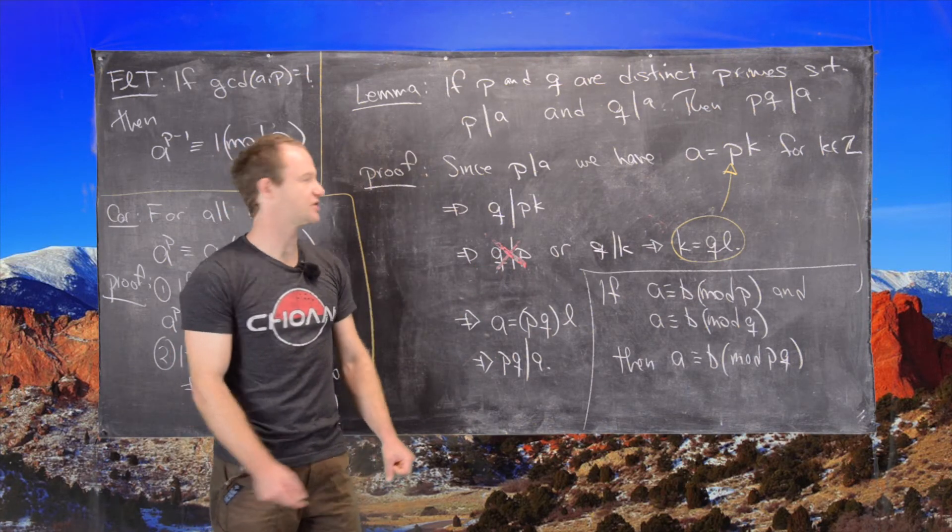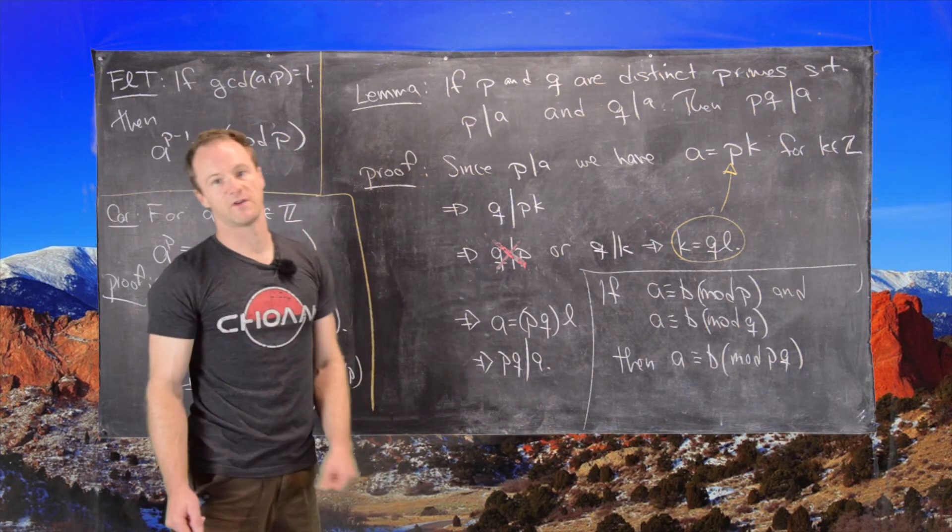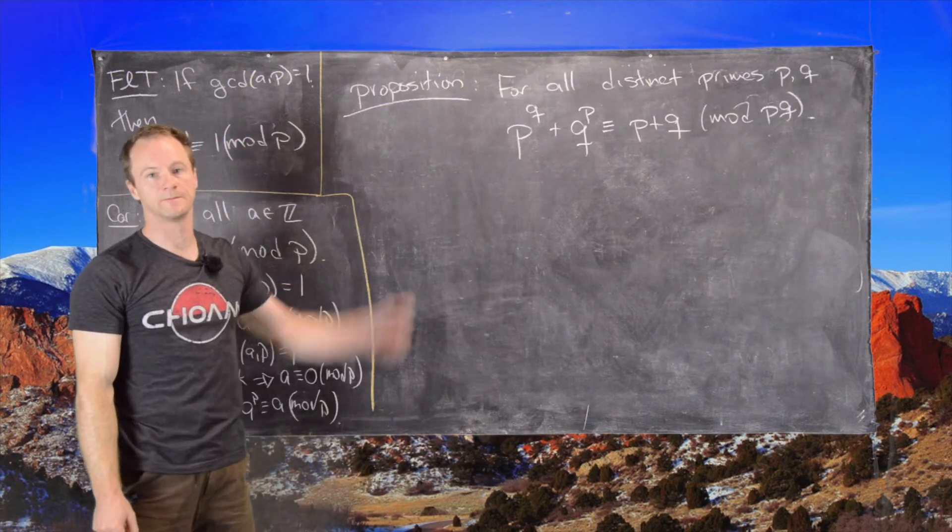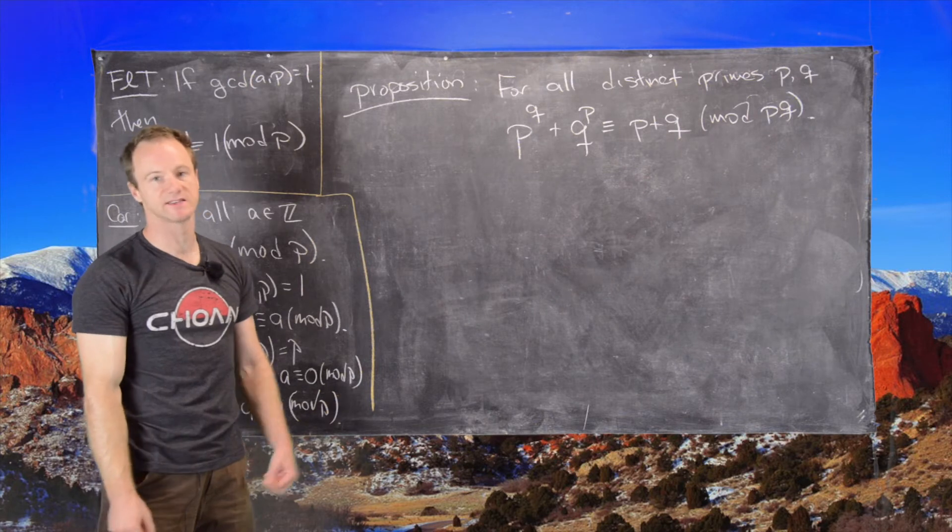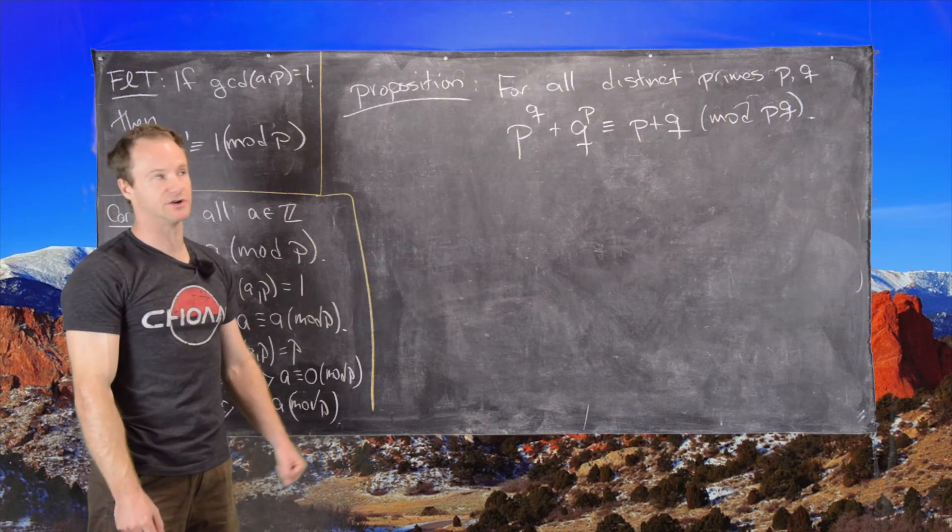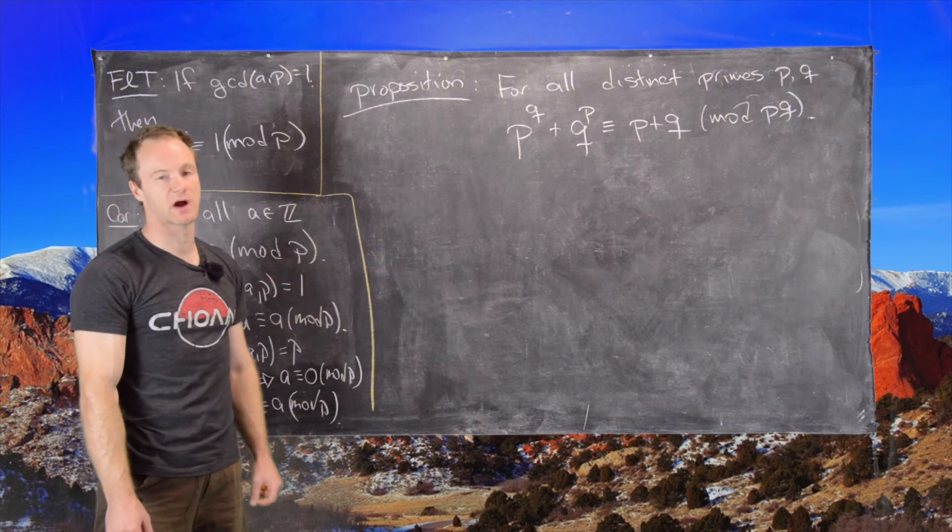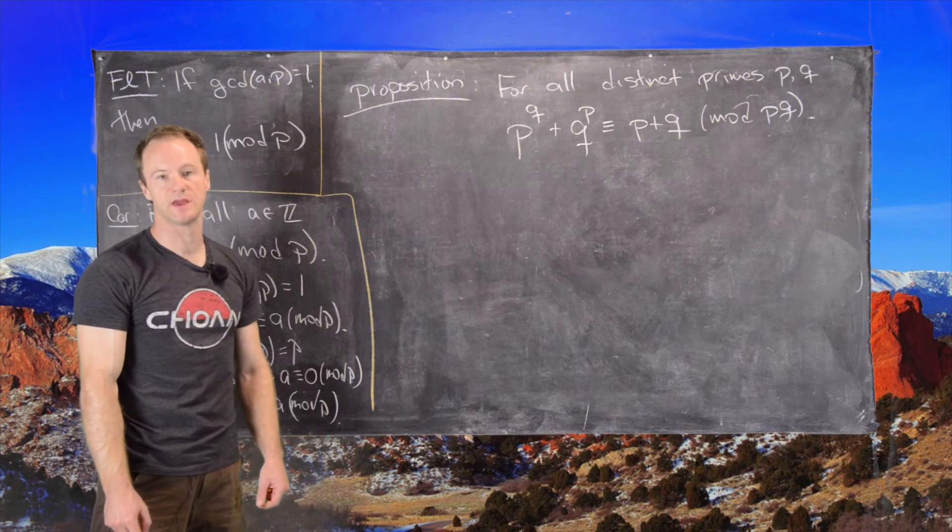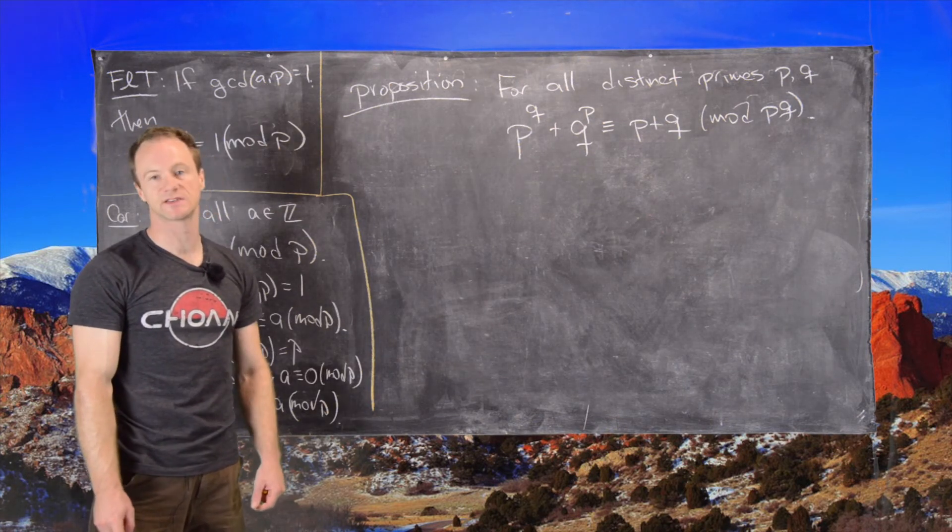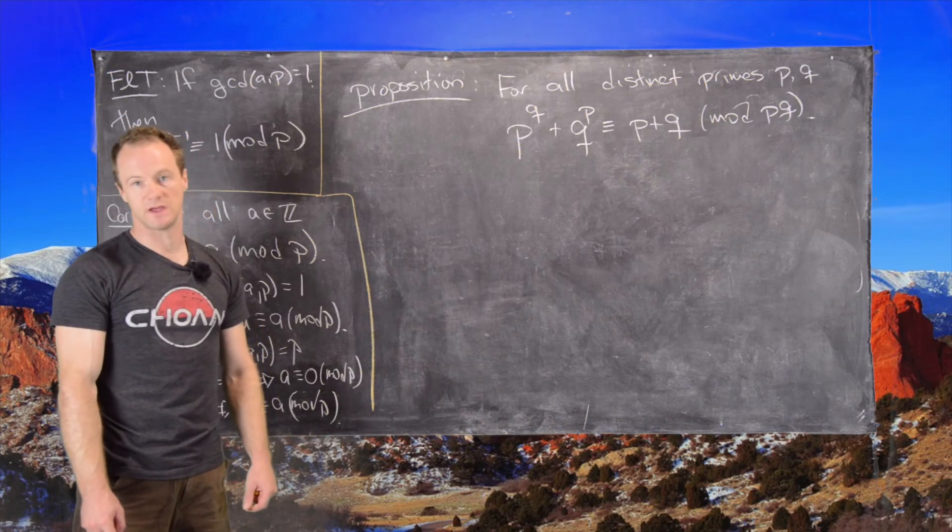So I'll clean up this board and then we'll get to the result that follows from Fermat's Little Theorem. So now we're ready to look at this result that follows from Fermat's Little Theorem. So it has like a nice symmetry to it. So for all distinct primes P and Q, we have P to the Q plus Q to the P is congruent to P plus Q mod PQ.